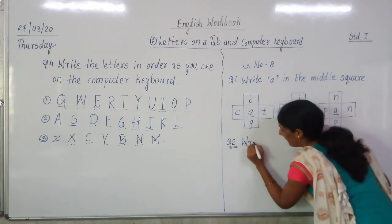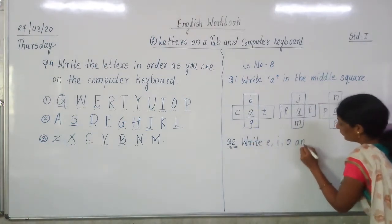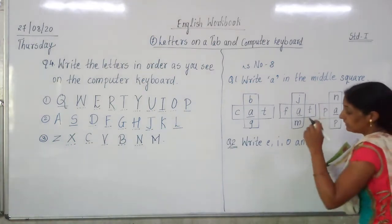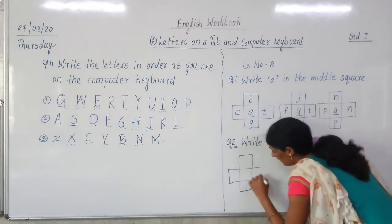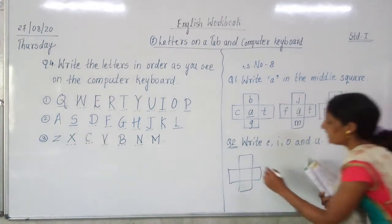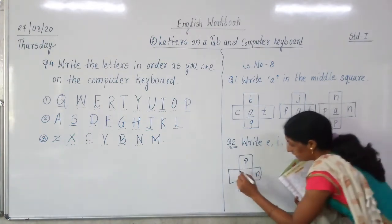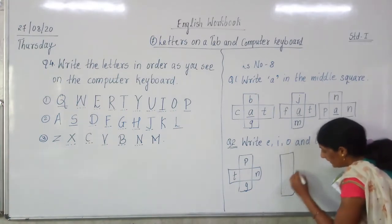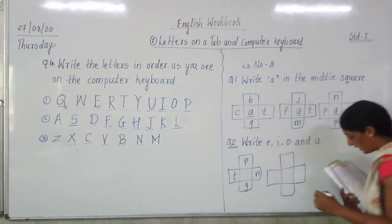Question number 2 is: Write E, I, O and U in the squares given in the boxes. The first box which is given has letters P, G, N, T. Second box: I will draw all boxes first and then we will fill in the middle square.